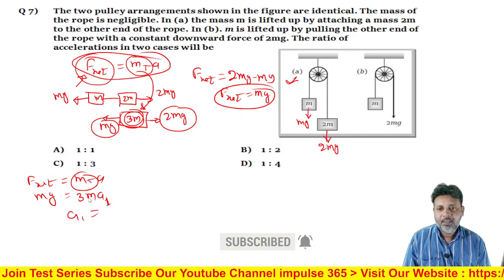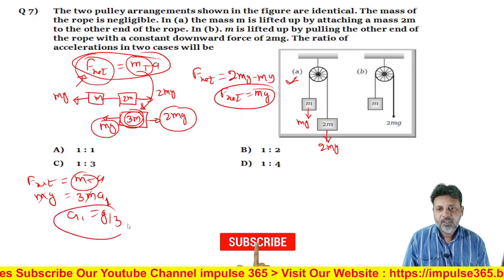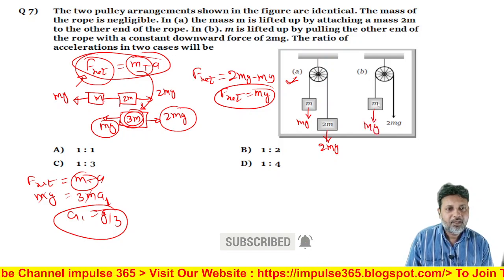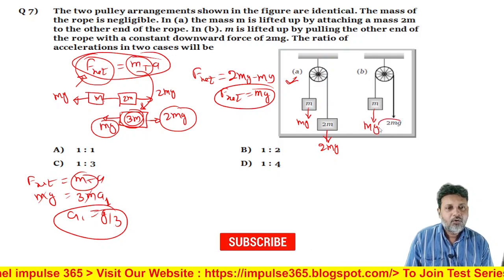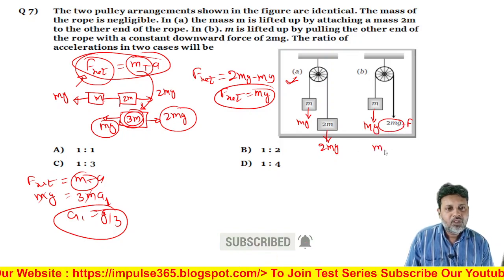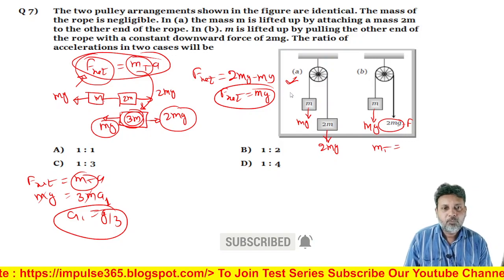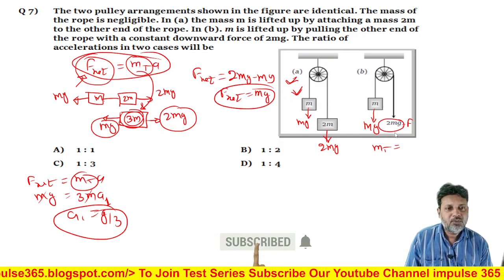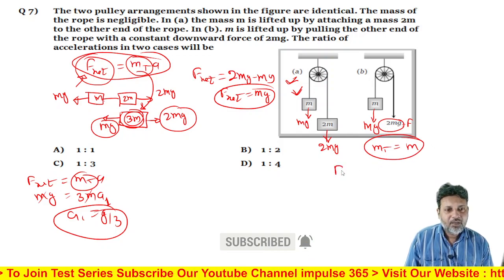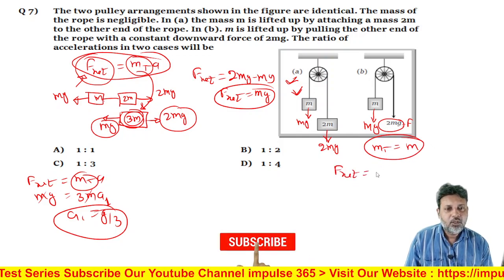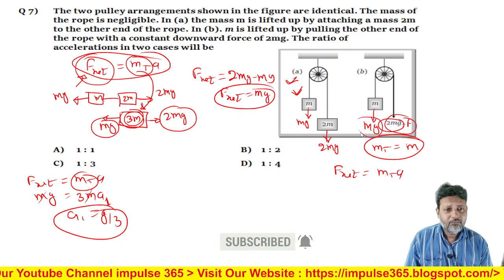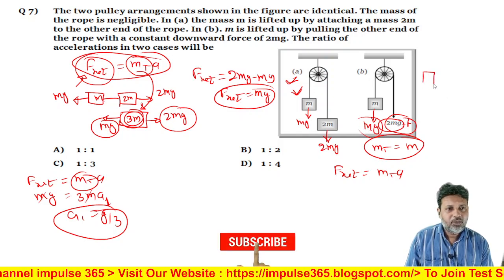Theek hai, MT. Lekin is case mein sirf ek mass hai, to MT ki value M hogi. Theek hai, M hogi. To ismein agar F_net aap use karoge, F_net is equal to MT into A. To 2MG nahi idhar lag raha hai, aur 1MG idhar lag raha hai. To ek body hai.